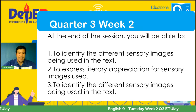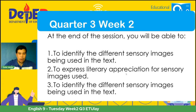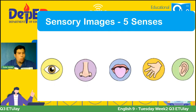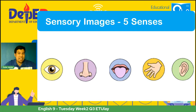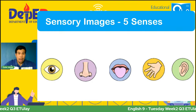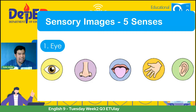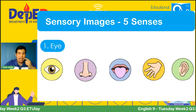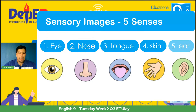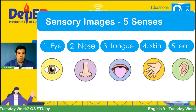Now, balikan natin. Alam naman pa rin natin ang ating five senses, and we are always using that. We got the eyes, our nose, our tongue, our skin, and our ear. We will have it one by one later. And what are sensory images? Ano bang purpose ng mga ito sa poetry, sa literature? Ano bang dahilan kung bakit nga ba natin pinag-aaralan ng mga ito? At bakit mahalaga? Why are these sensory images important in literature?